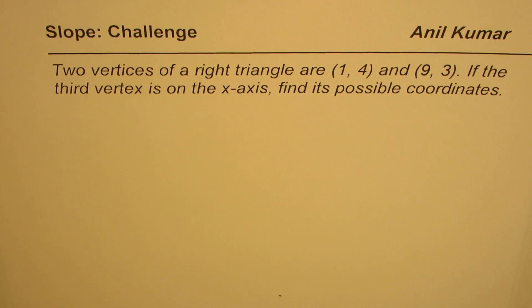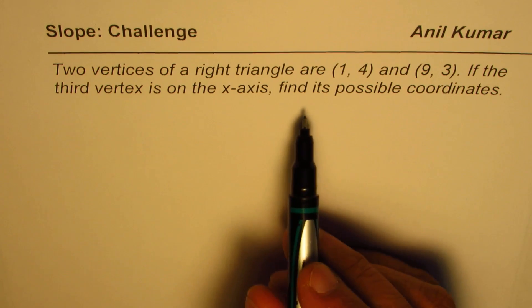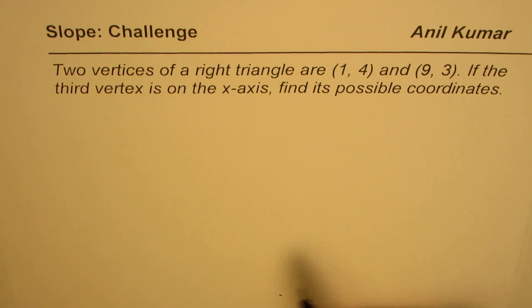I'm Anil Kumar and here is a challenge question on slope. The question is: two vertices of a right triangle are (1, 4) and (9, 3). If the third vertex is on the x-axis, find its possible coordinates.